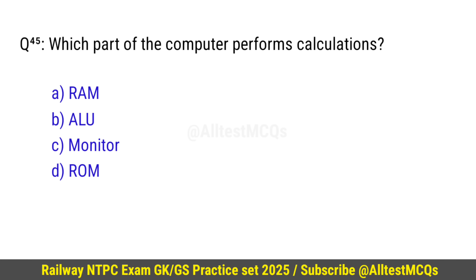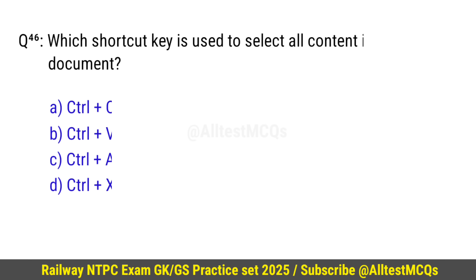Question number 45: Which part of the computer performs calculations? Right option is B — ALU. Question number 46: Which shortcut key is used to select all content in a document? Right option is C — Ctrl + A.